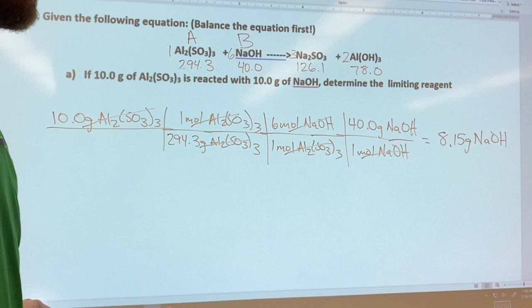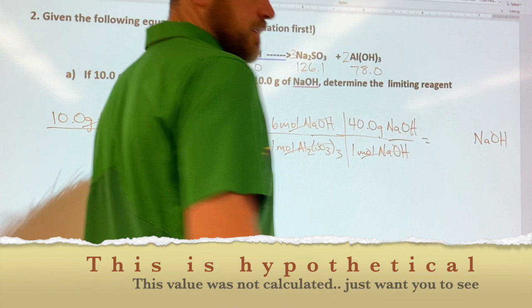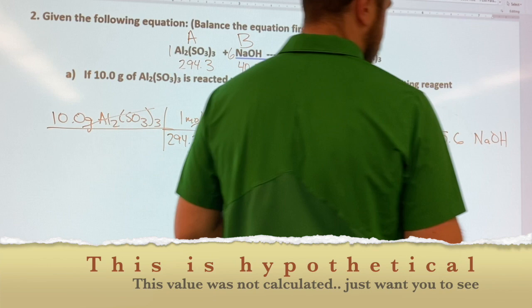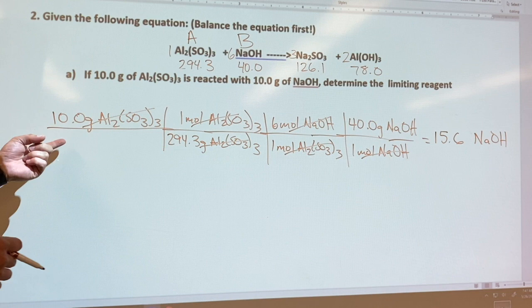Another scenario that could take place, but I just want you to be cautious that I'm just changing it, is if, let's pretend this number had not been 8.15 but instead had been 15.6. Let me read this to you a little different way. If that number had been 15.6 and we say, okay, for every 10.0 grams of Al₂(SO₄)₃ I'm gonna need 15.6 grams of NaOH, well we don't have that much.